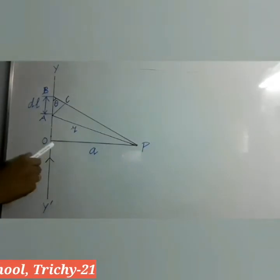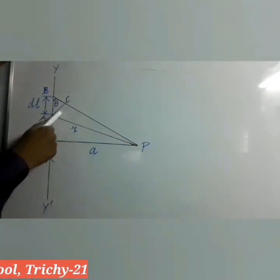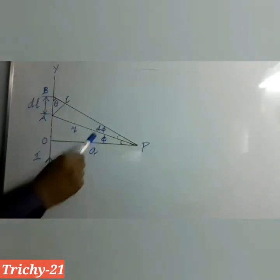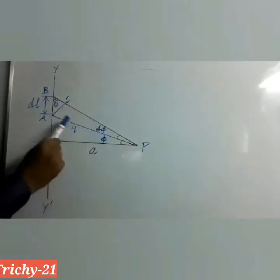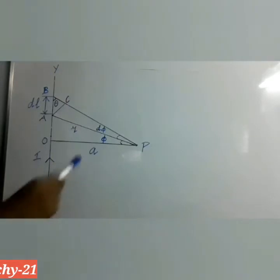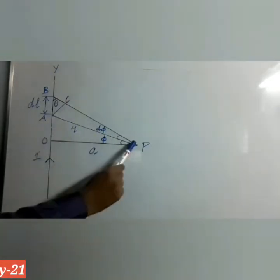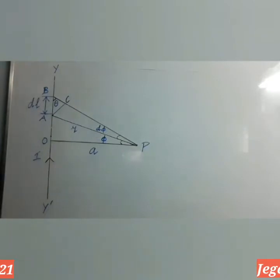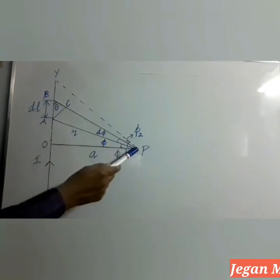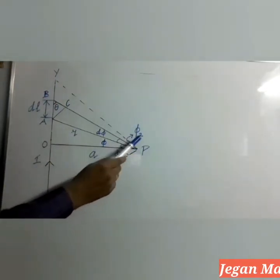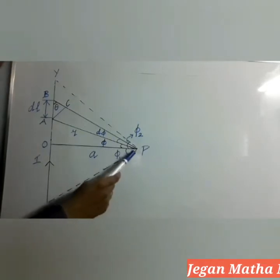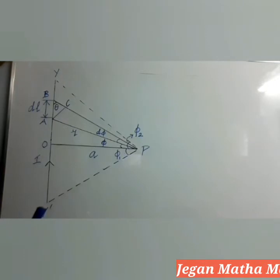Applying trigonometry, draw a perpendicular AC to the line BP as shown here. Let dΦ be the angle between lines AP and BP, and Φ be the angle between AP and OP as shown here. The line joining edge Y and P makes angle Φ₂, and the line joining Y' and P makes angle Φ₁ with the line OP.